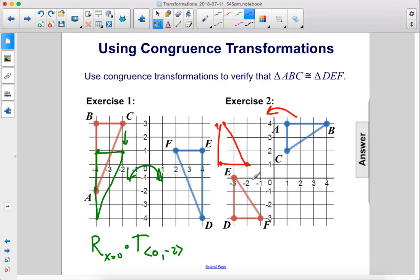Then we translate it this way, to the right one, and then 1, 2, 3, 4 down. So the first thing was the rotation, 90 degrees, about the origin. And then we also had a translation to the right one and down 4.